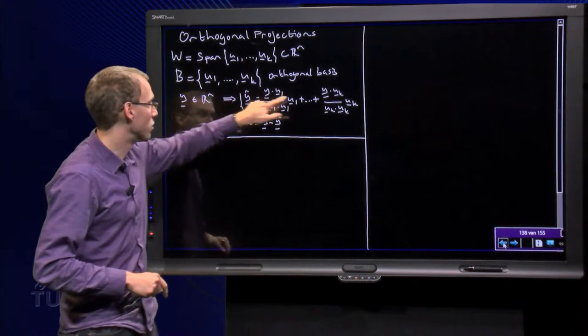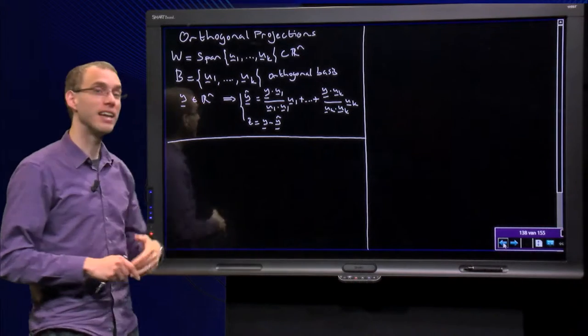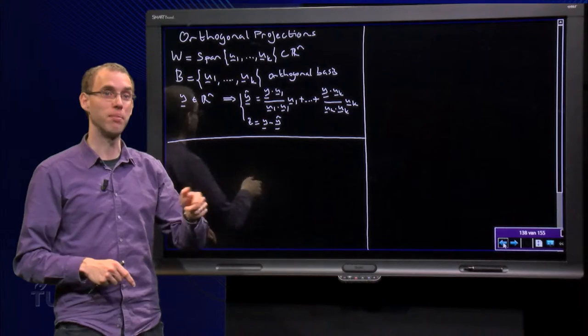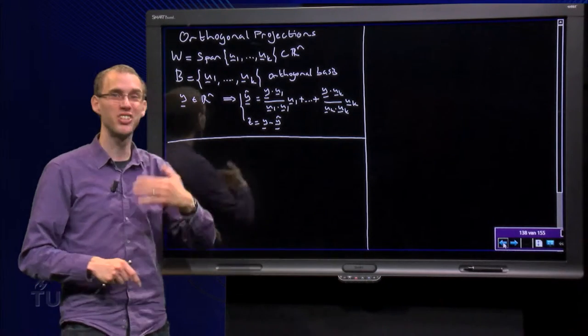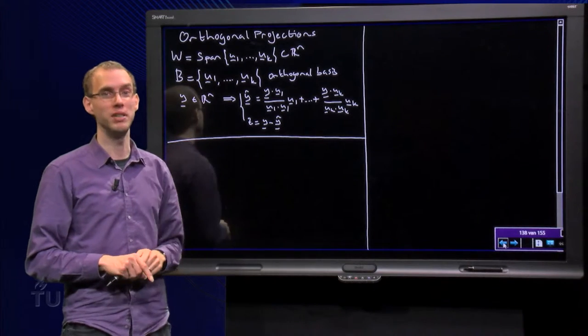y-hat is this horrendous formula over here, a combination of a lot of terms. And then I know y equals y-hat plus z, so z equals y minus y-hat. So as soon as we have y-hat we can compute z immediately.